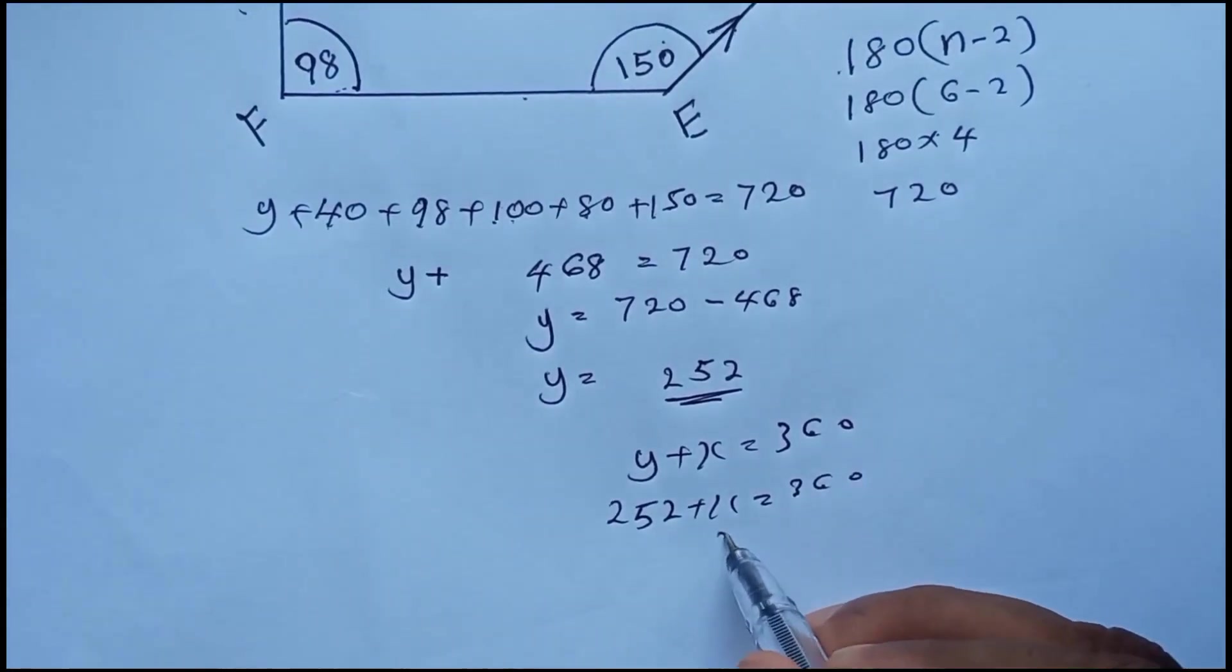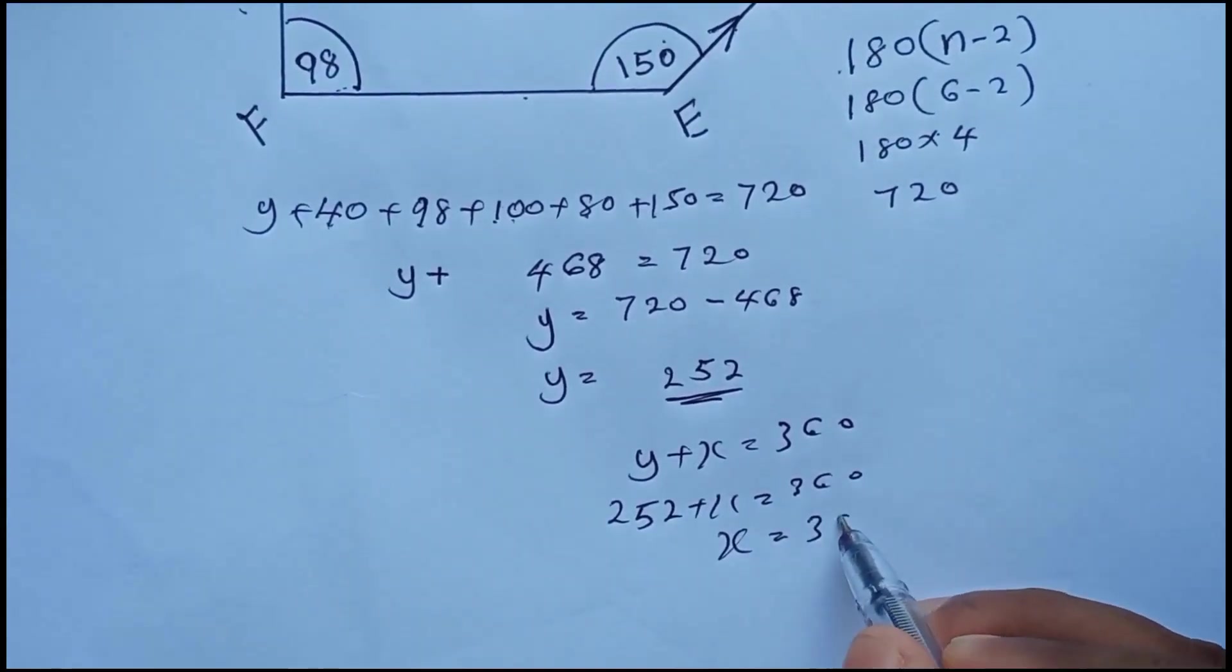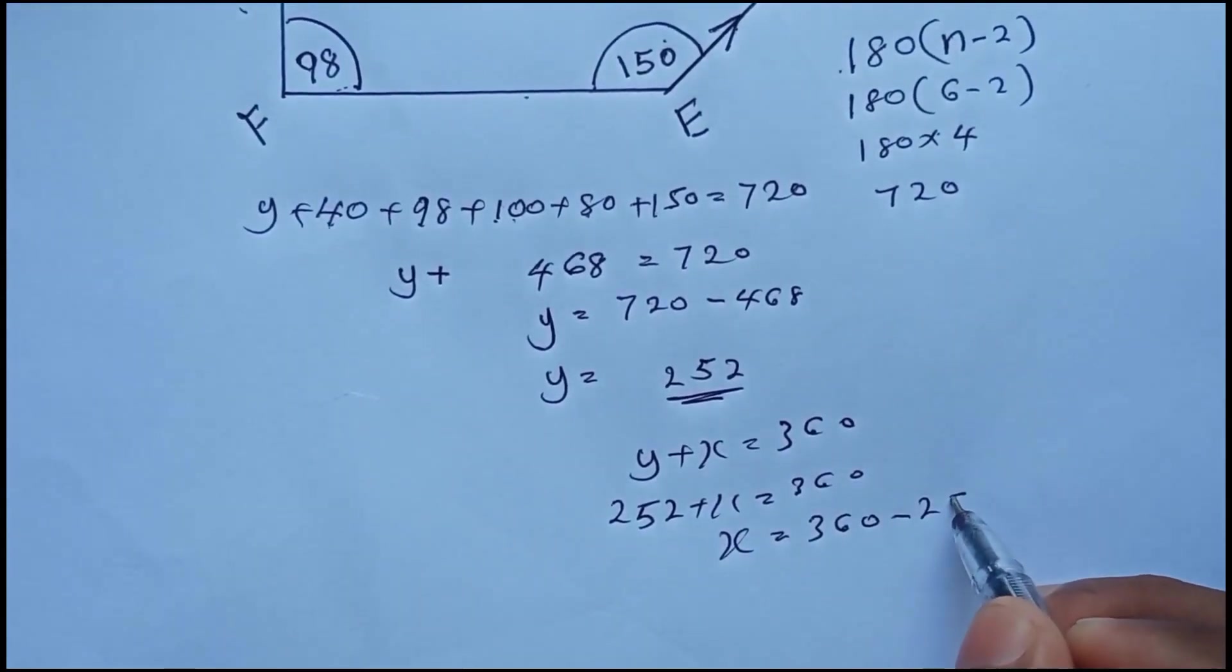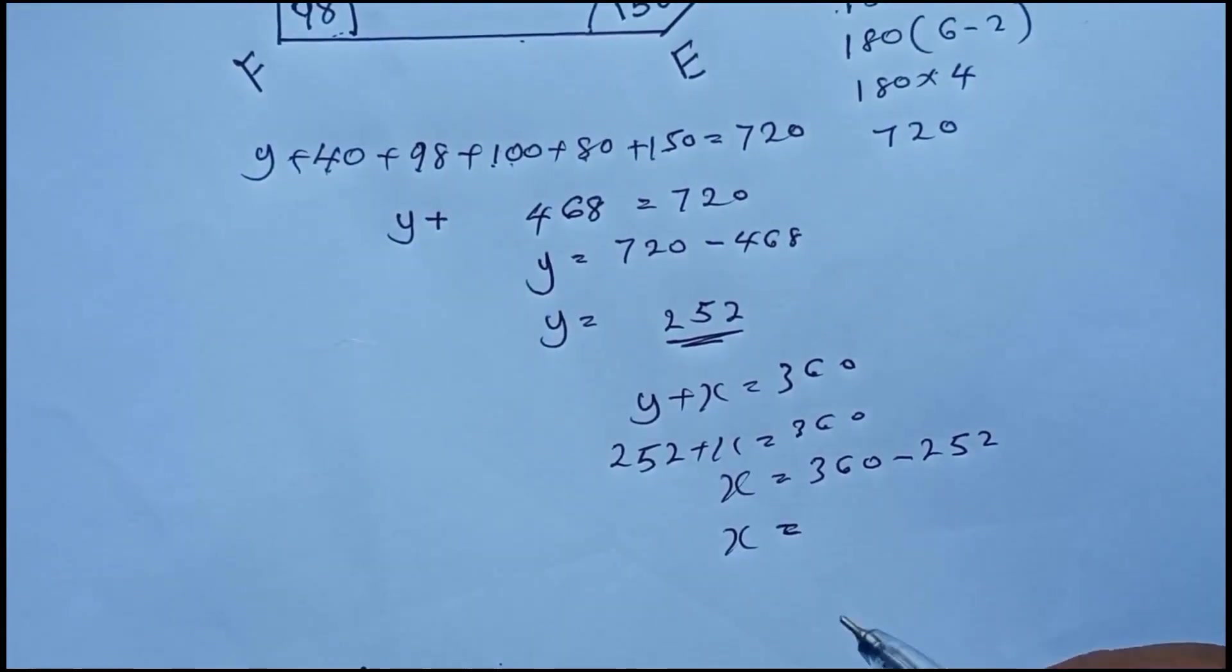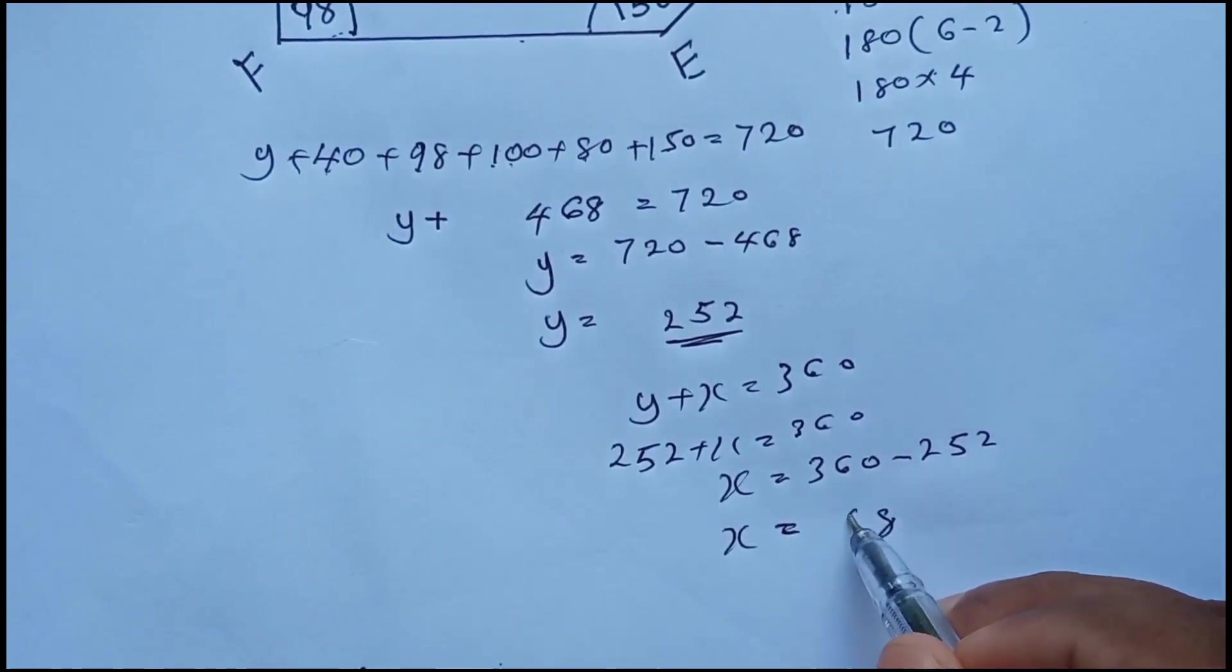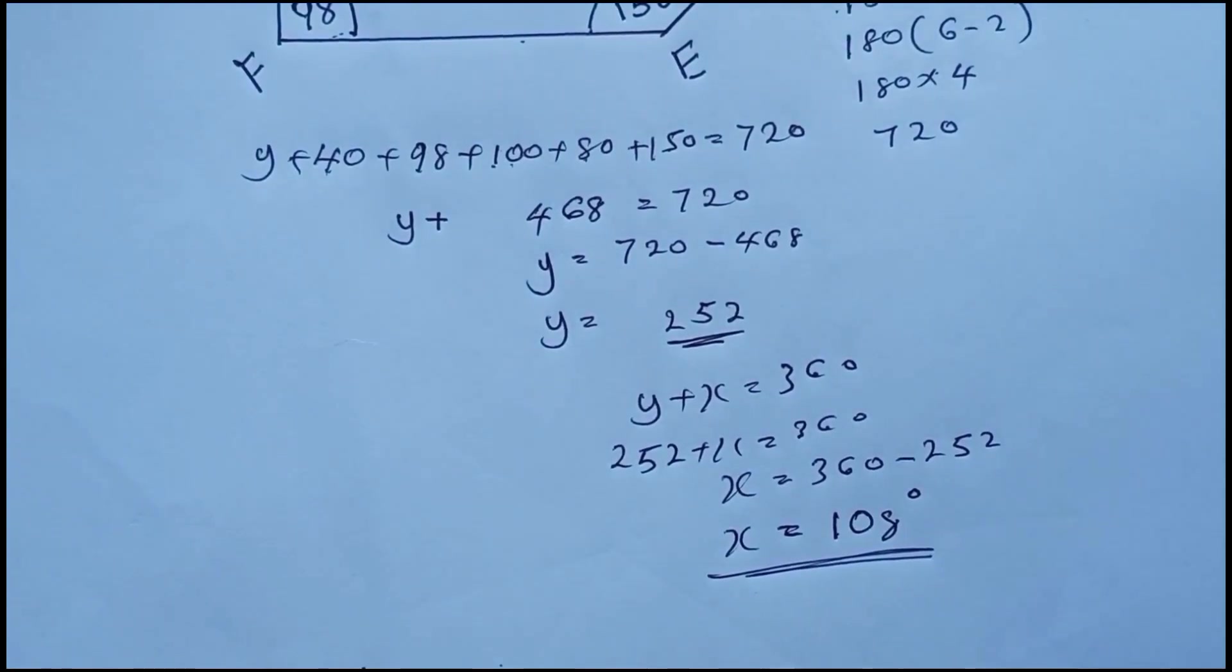Now to get x, 360 minus 252. So your value for x you will get here 8, and here 0, and then here 1. That means x equals 108.